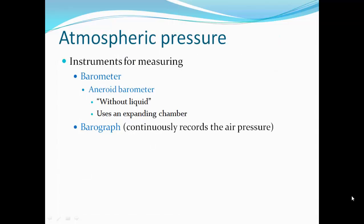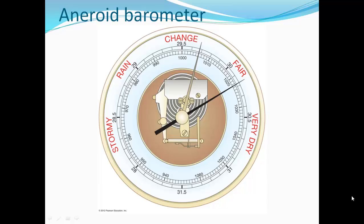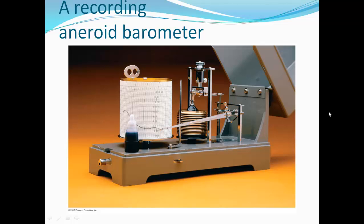An aneroid barometer is without liquid; it uses an expanding chamber instead. A bariograph continuously records the air pressure. Here's an aneroid barometer showing the current barometric pressure, and here's a bariograph constantly recording the atmospheric pressure.